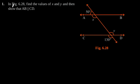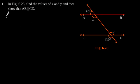Exercise 6.2, question number 1: in figure 6.28, find the values of x and y, and then show that AB is parallel to CD. First, we will consider this straight line. From that we can observe that 50 degrees plus x is equal to 180 degrees, as they form a linear pair.